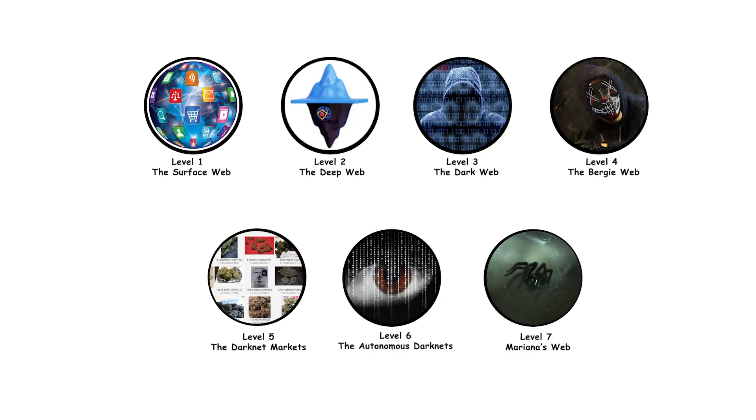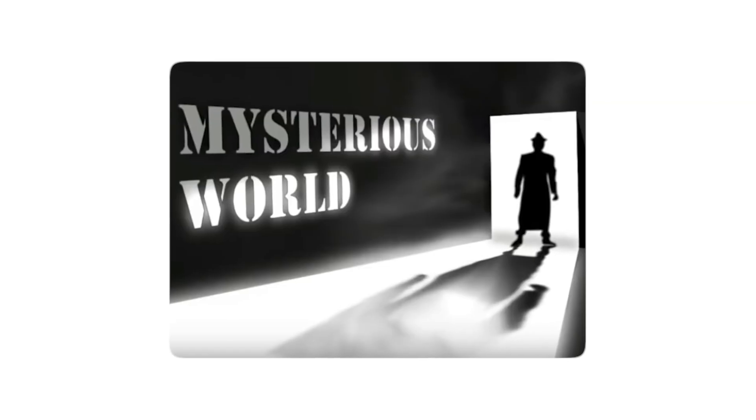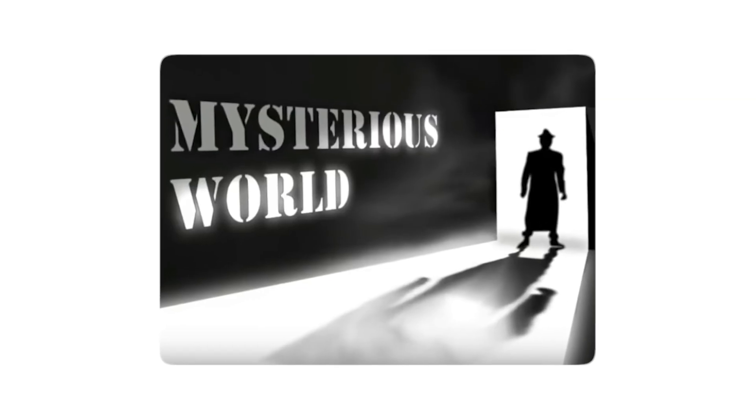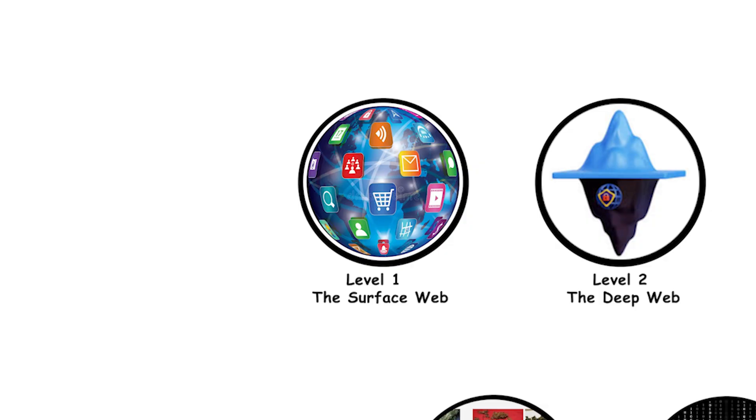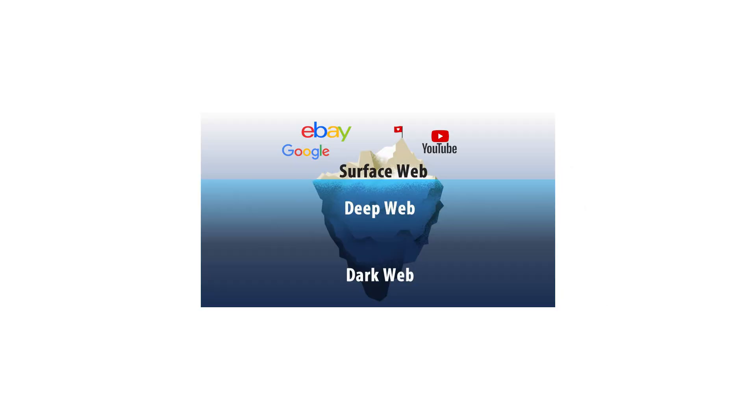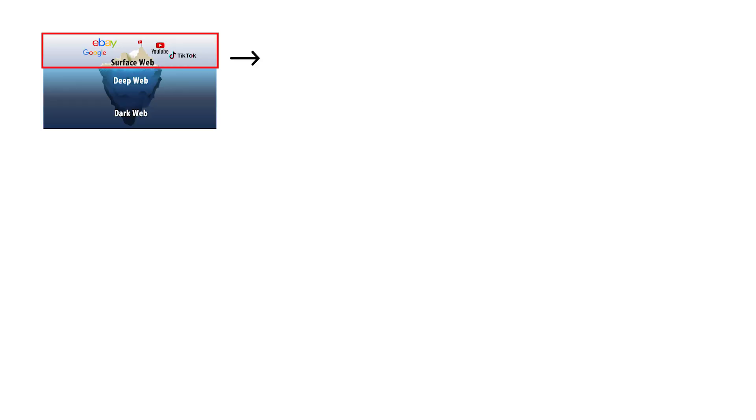The Seven Levels of the Dark Web — every level of the internet's shadow explained. Level 1: the surface web, the part everyone knows.